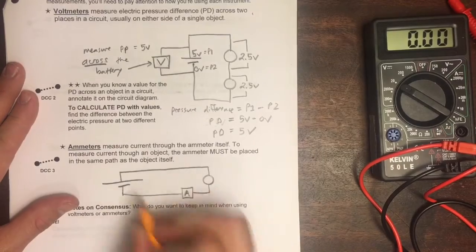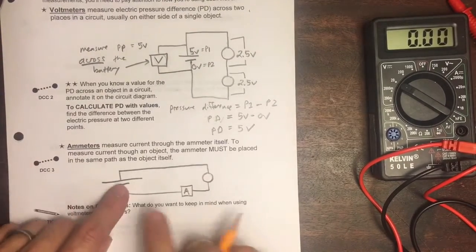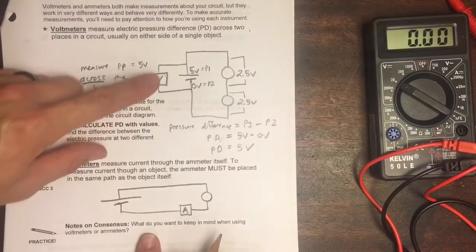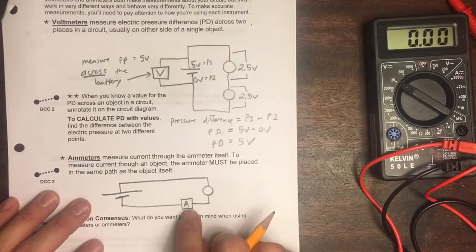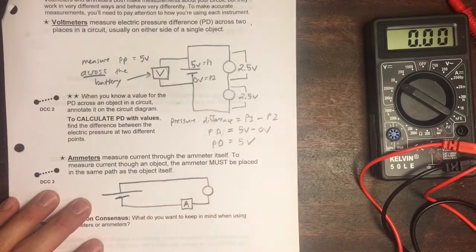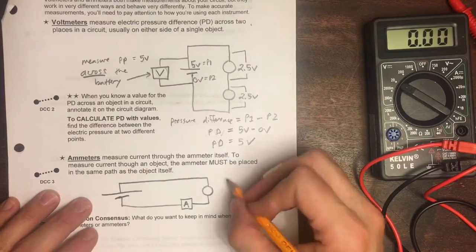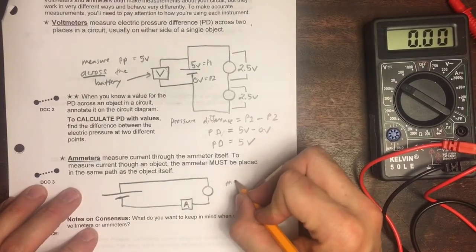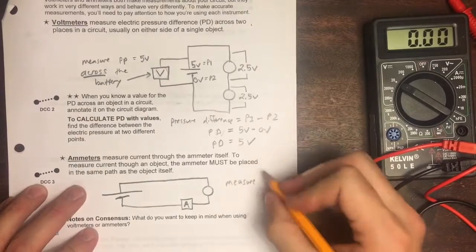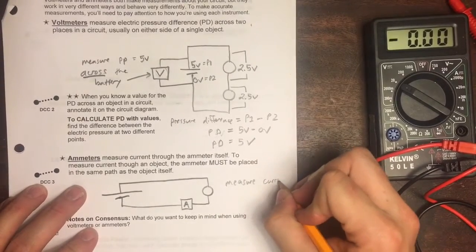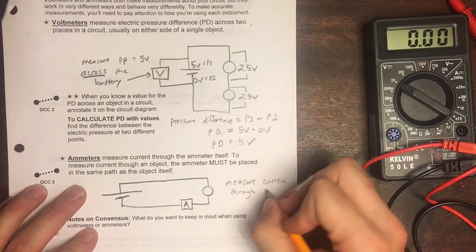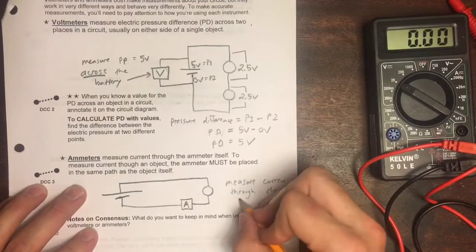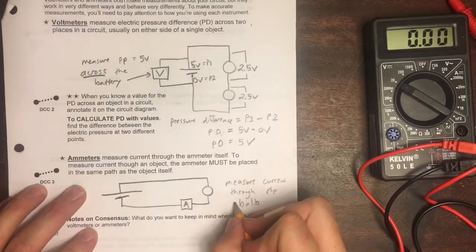We're going to draw an ammeter as a box with an A in it. And this is an extremely different way of measuring things than the voltmeter. Notice the voltmeter is across the object. The ammeter is in the same path as the object itself. So this would be how we measure current through the bulb.